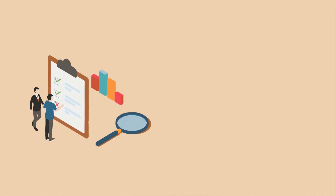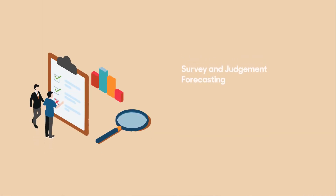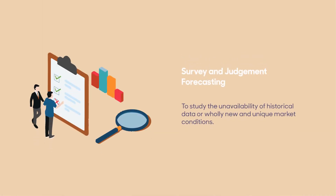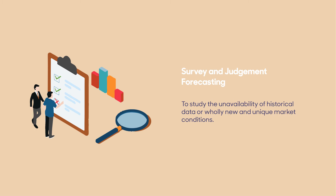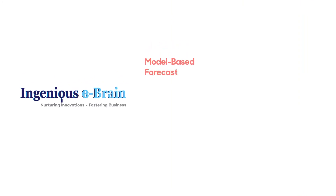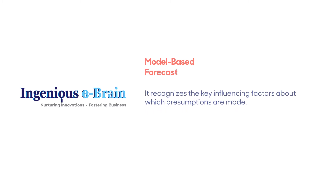Survey and judgment forecasting. This is based on the opinion and judgment of various industry experts. This forecasting technique is used to study the unavailability of historical data or wholly new and unique market conditions. An ingenious e-brain market forecast is based on a market model specific to the dynamics of a particular market segment.